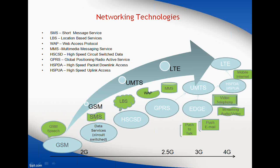Here you can see the very first — I'm not showing the 1G, that is the analog technology, it is nothing but the AMPS we used to have. Then the 2G comes with the GSM, and then moving on further it was 2.5G, 3G, and 4G. The 2G, the GSM, it just supports speech — we will be able to transmit only voice calls, nothing else.